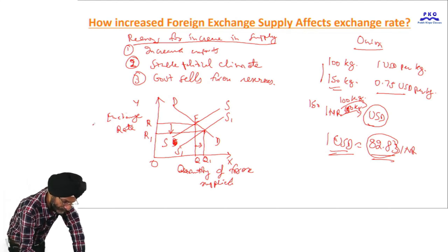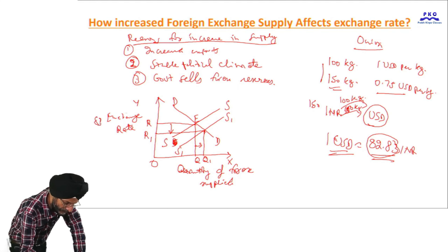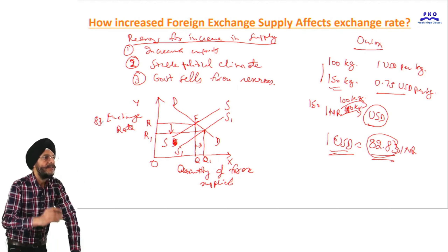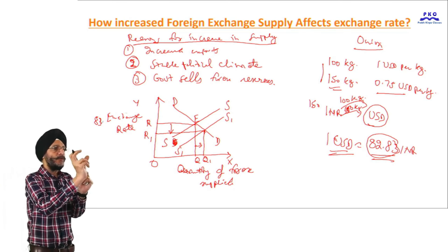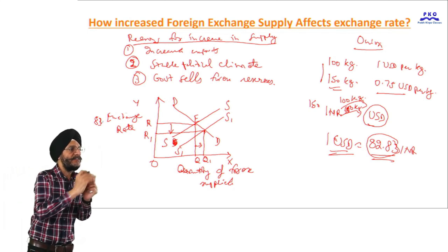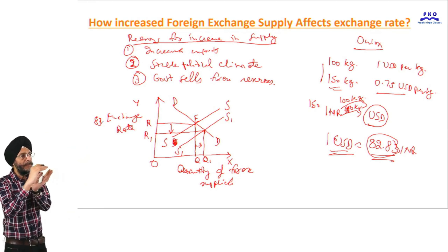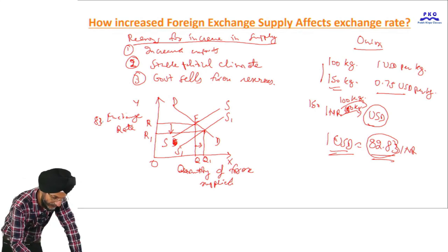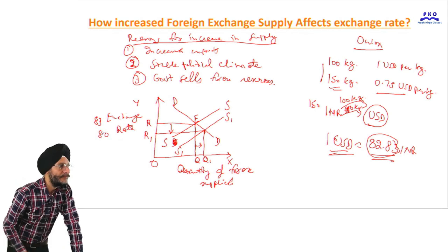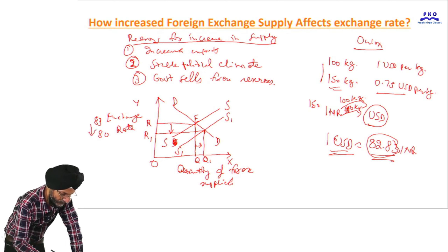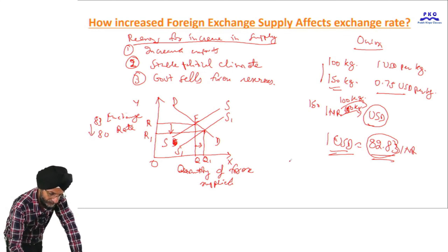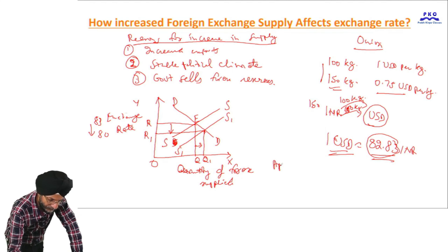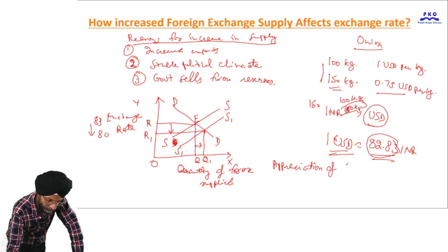Suppose it was earlier 83 Indian rupees — that is, earlier to get 1 US dollar we had to pay 83 rupees. But as the supply of US dollars or foreign currency has increased, the exchange rate has decreased to, say, 80. It means that there is appreciation of domestic currency.